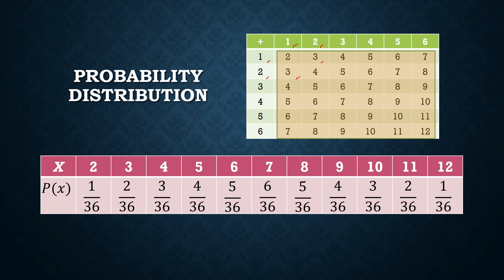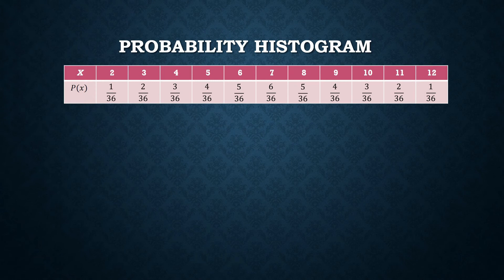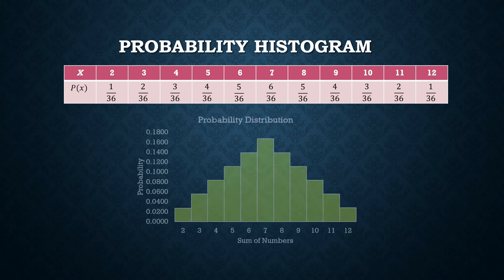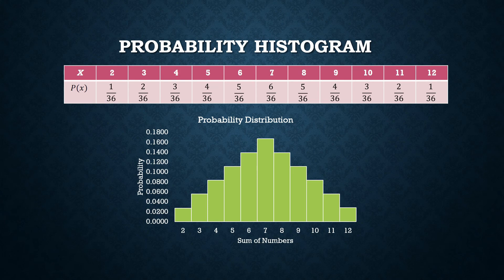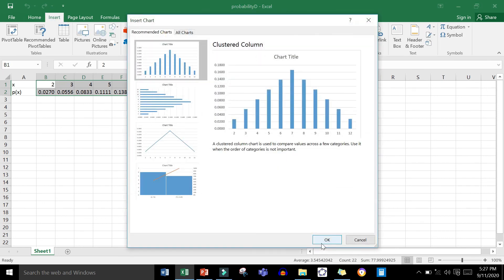In a probability distribution, you are showing the probability of each outcome in an experiment. You can also show the probability distribution using a probability histogram. Let's go back to Excel. I already prepared the data here — the outcomes 2 through 12 and their probabilities. To produce the probability histogram, highlight your data and then insert a chart.